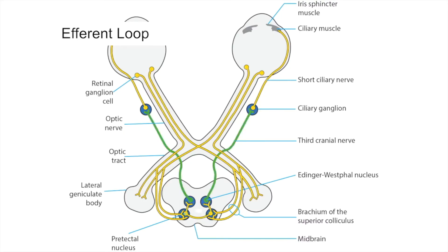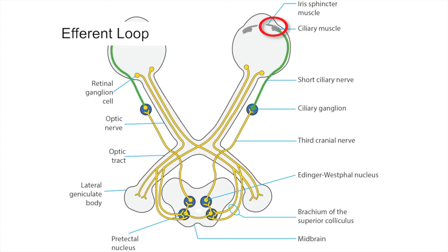Pre-ganglionic axons exiting from the Edinger-Westphal nuclei carry signals in both third cranial nerves to the ciliary ganglia in both orbits. Post-ganglionic axons leaving the ciliary ganglia in short ciliary nerves carry the signal to iris sphincters for pupil constriction and to ciliary muscles for accommodation.